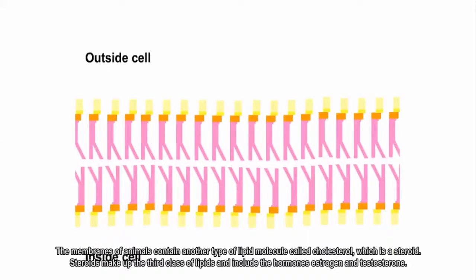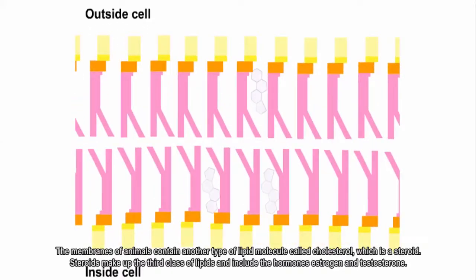The membranes of animals contain another type of lipid molecule called cholesterol, which is a steroid. Steroids make up the third class of lipids and include the hormones estrogen and testosterone.